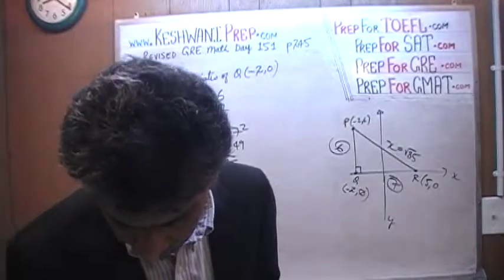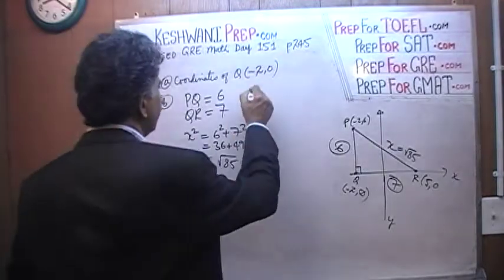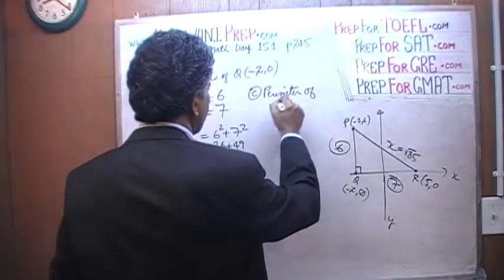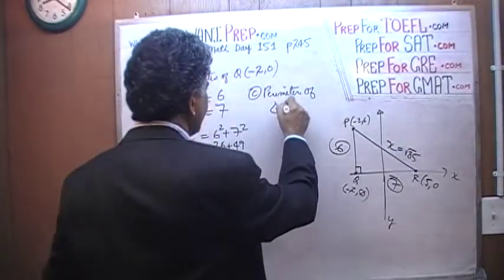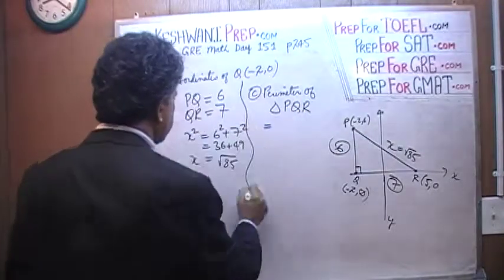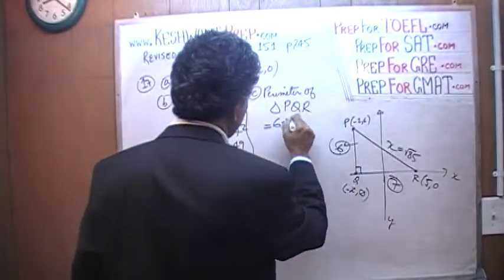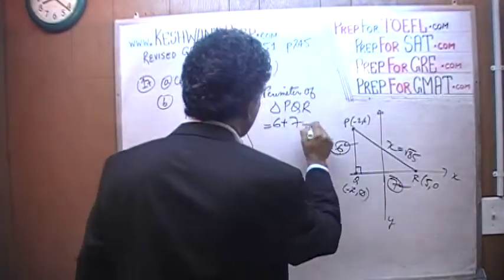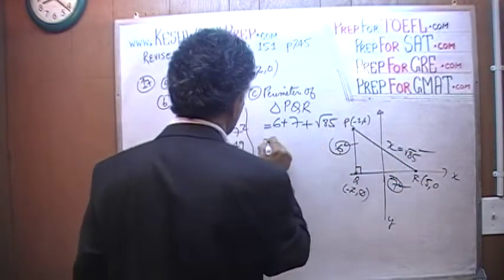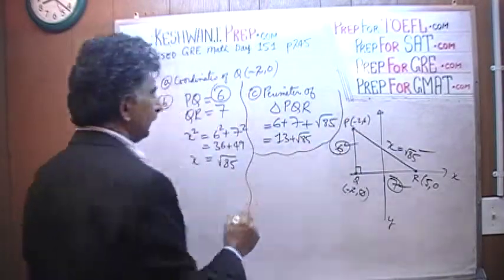So that was the second part. Then they ask you in part C the perimeter. The perimeter of triangle PQR is simply 6 plus 7 plus the root of 85. 13 plus root of 85 is the perimeter.